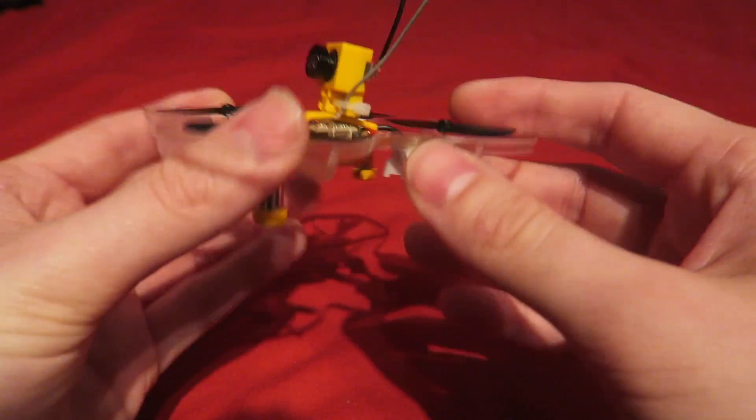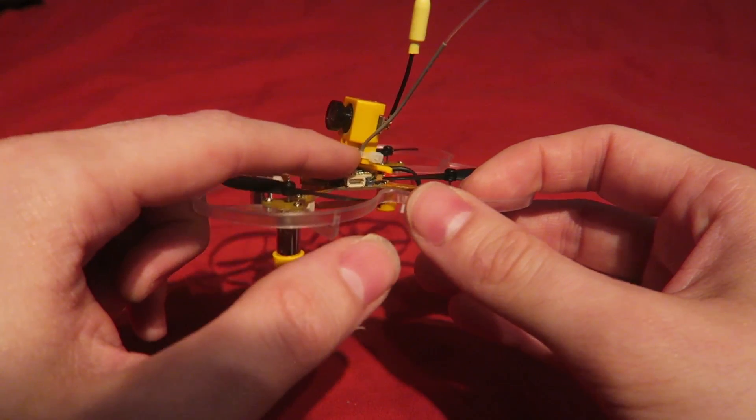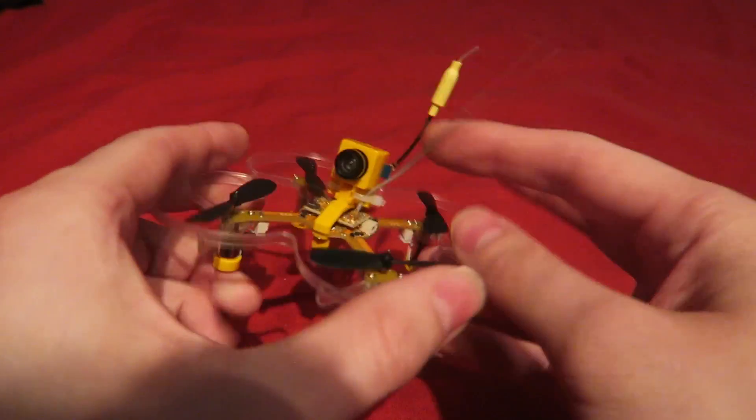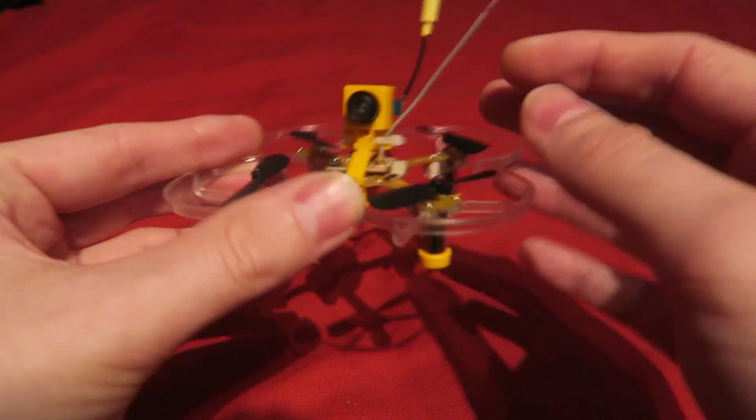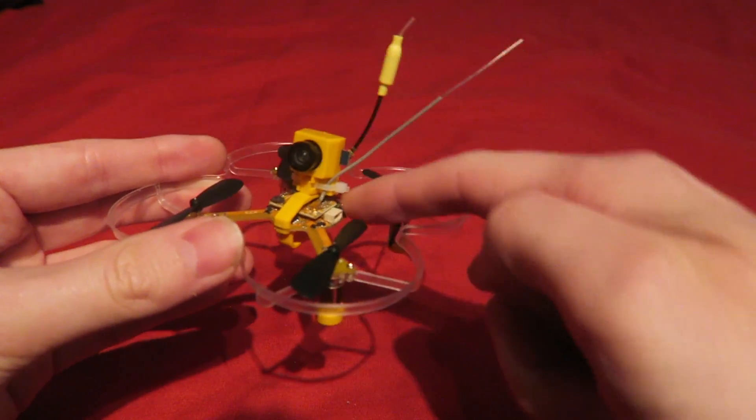You're either going to break this or lose it and another good reason for using a tiny cable tie is you can feed this antenna up here as well. Now out of the box it comes just pointing straight across the props which is no good.